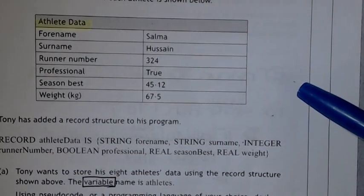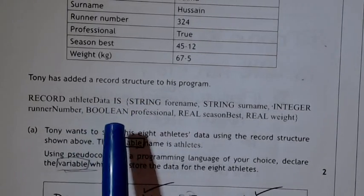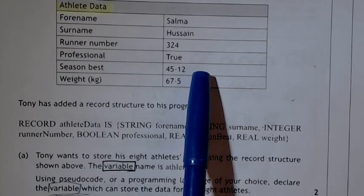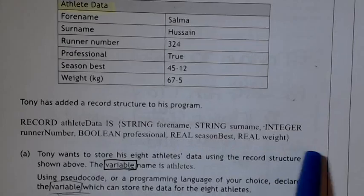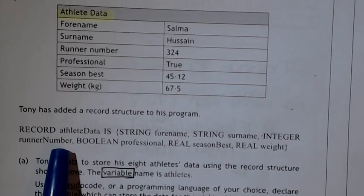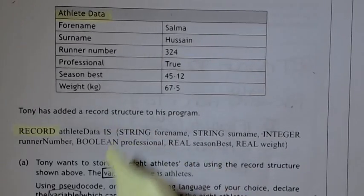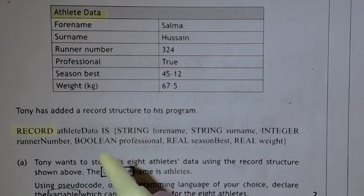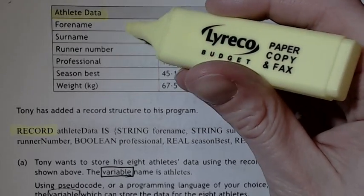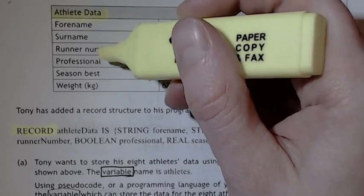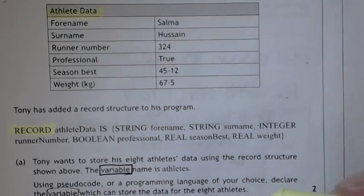The other information would be held within another element. Tony has added a record structure to this program. Sometimes you're actually given this table, but then asked to write it down yourself — don't take it as a given that it will always be provided. So how you write that down is you have to declare it. You use the actual record name and then work your way through, stating the name of each field and the type of data it will hold.